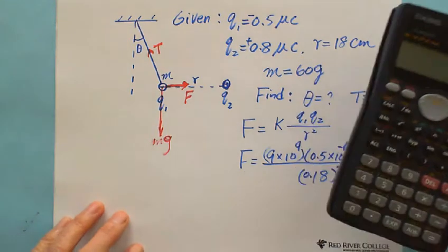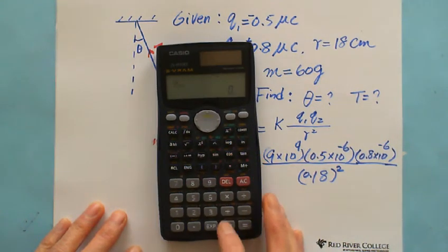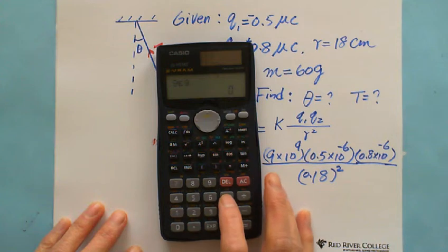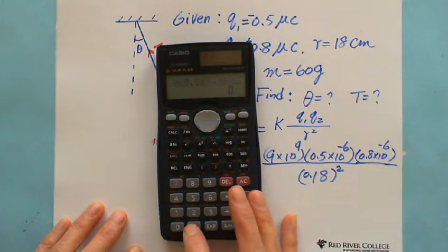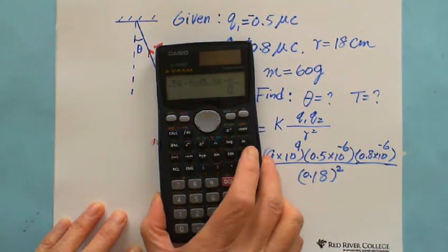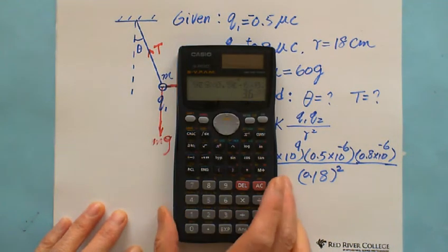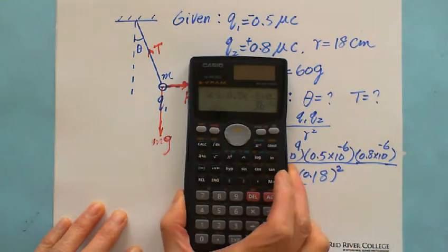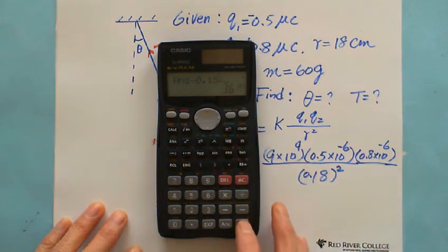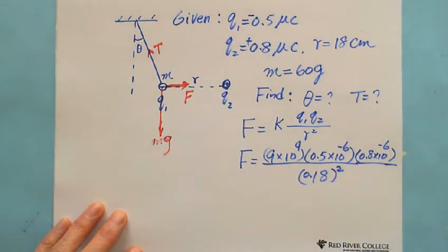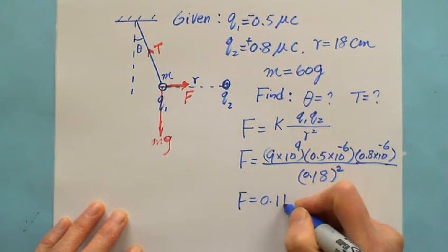So you can calculate this force: 9 times 10 to the 9 multiply 0.5 times 10 to the negative 6 multiply 0.8 times 10 to the negative 6, and we got 3.6 times 10 to the negative 3, divided by 0.18 squared, which is 0.11. So F equals 0.11 Newton.